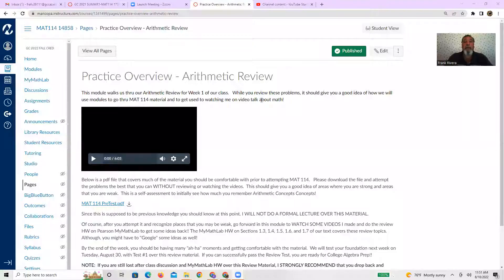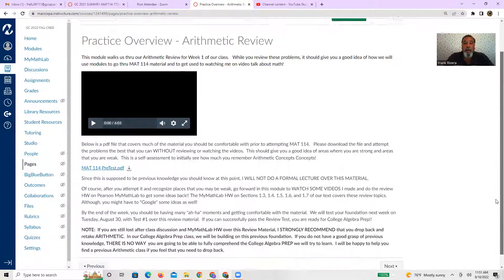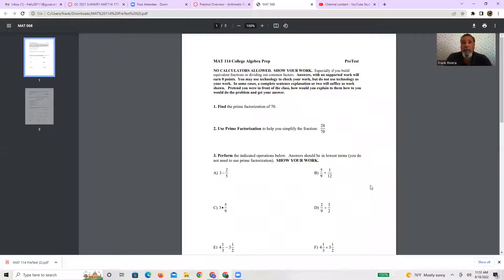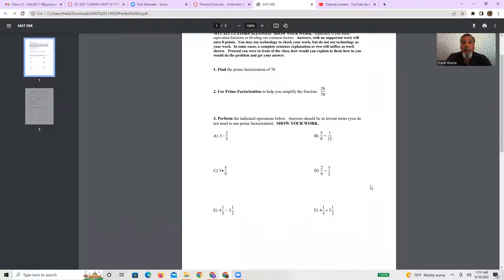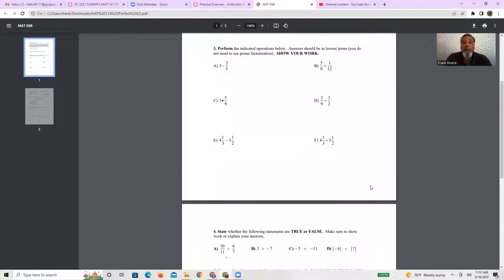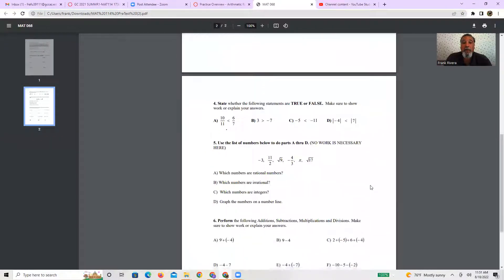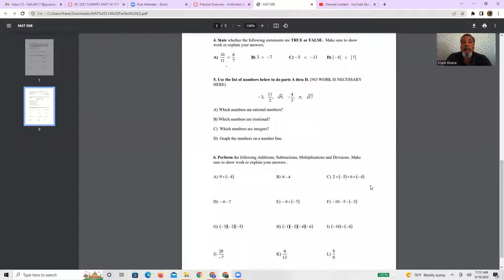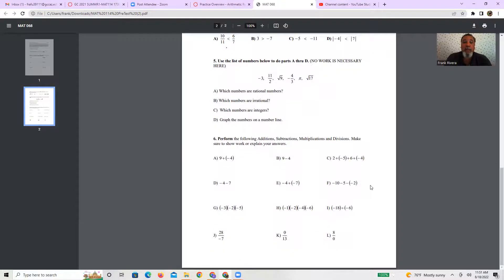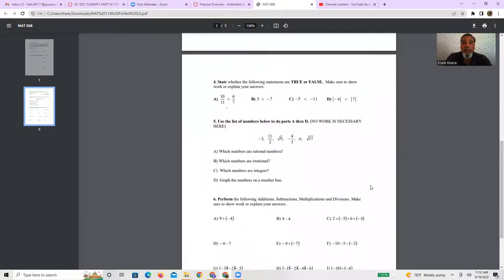So without any further ado, let me go ahead and walk you through this review module. And basically what you'll see is that I have a 114 pre-test already made. So your first order of business in terms of our review week is to go ahead and download this pre-test. And what it basically goes over: arithmetic ideas of factorization, prime factorization, adding and subtracting and multiplying, dividing fractions and mixed numbers, working with your real number system and ordering it and recognizing what natural numbers and integers are, plotting them on number lines, as well as adding, subtracting, multiplying, dividing real numbers. So that's basically what the review is.